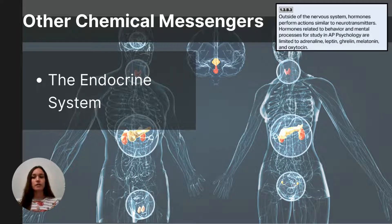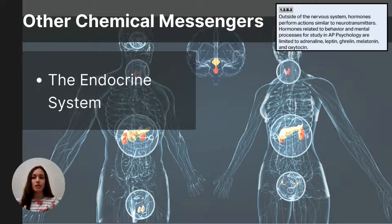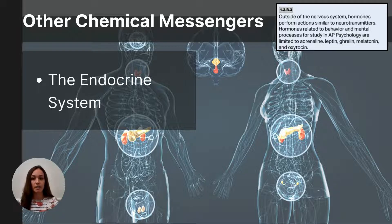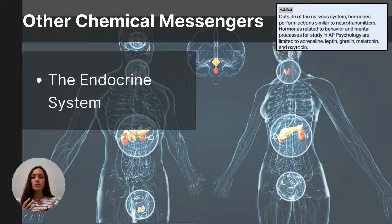So far we've focused on the nervous system as the communication network between brain and body, but there's another system called the endocrine system. The endocrine system is not nearly as fast as the nervous system, but its effects can last longer in the body. It is coordinated by the hypothalamus in conjunction with the pituitary gland, and they coordinate to release hormones into the bloodstream. Like neurotransmitters in the nervous system, hormones communicate specific messages to the body. Students need to know the functions of five hormones, but not necessarily the glands or the entire endocrine system.